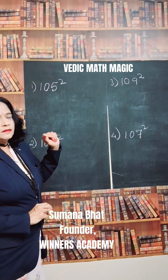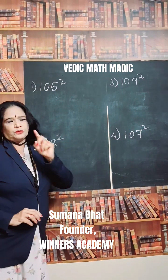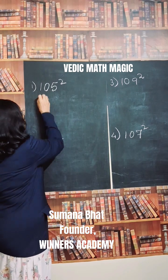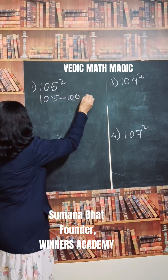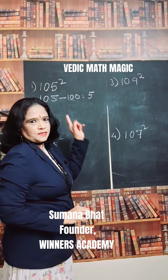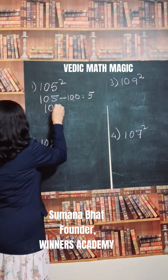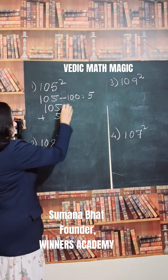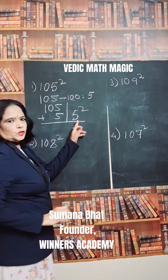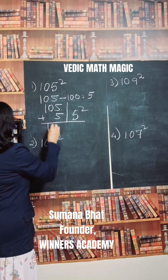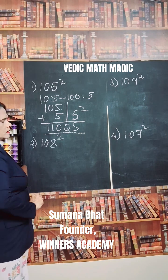For example, one hundred and five squared. First, find the difference: 105 minus 100 equals 5. Second, add the difference: 105 plus 5 equals 110. Third, square the difference: 5 squared is 25. So the answer is 11025.